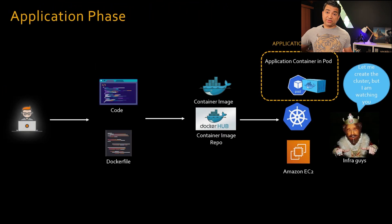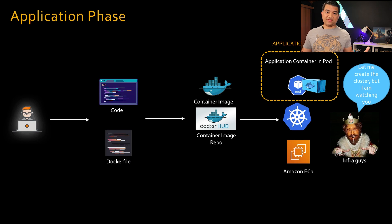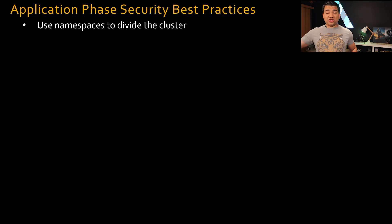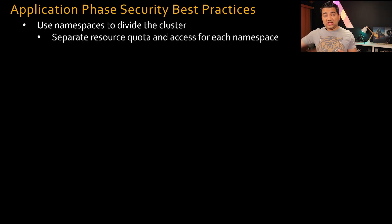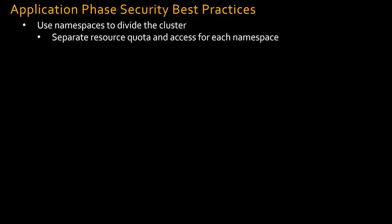The next phase is the application phase, which has the most security best practices. In the shared responsibility model, a lot comes down to the application. First, use namespaces to divide the cluster — this helps with multi-tenancy by separating different applications, and you can also set separate resource quotas for each namespace. Resource quotas specify the maximum CPU and memory a namespace can allocate. So even in case of security attacks such as DDoS, it won't exhaust the CPU and memory of the entire cluster — only the specific namespace is impacted while others work normally.